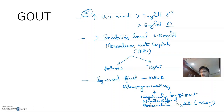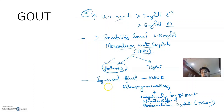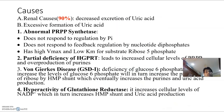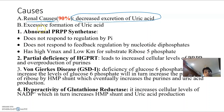Three criteria confirm gout: uric acid levels more than 7 mg/dL in males (more than 6 in females), MSU crystal deposition causing arthritis, and appearance of MSU crystals on polarizing microscopy. The maximum causes are: kidneys with decreased excretion of uric acid, and excessive formation of uric acid.